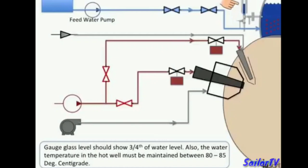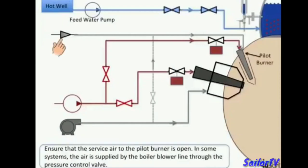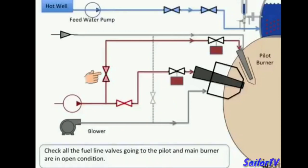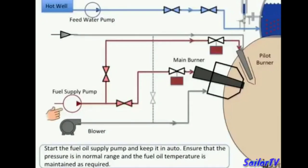The water temperature in the hot well must be maintained between 80 to 85 degrees centigrade. Ensure that the service air to the pilot burner is open — in some systems the air is supplied by blower line through the pressure control board. Check that all fuel line valves going to the pilot and main burner are in open condition. Start the fuel oil supply pump and keep it in auto, ensuring the pressure is in normal range and the fuel temperature is maintained as required.